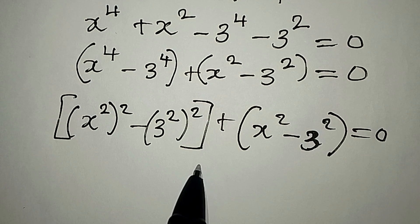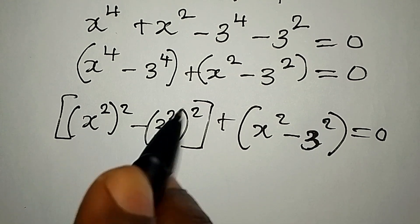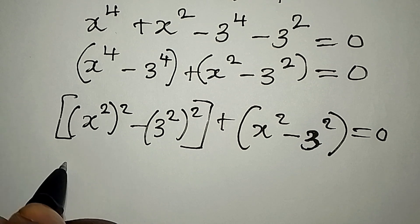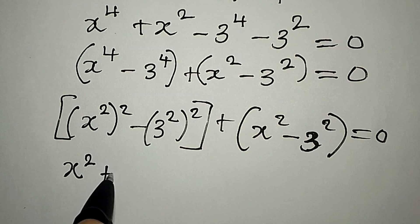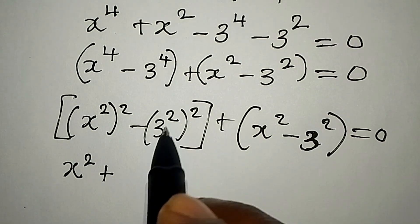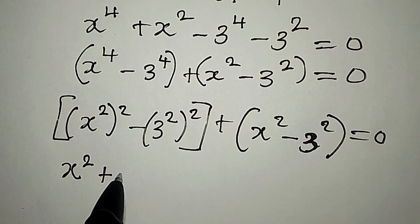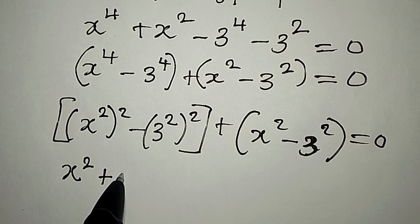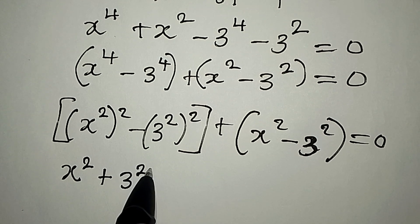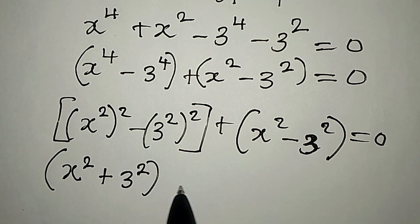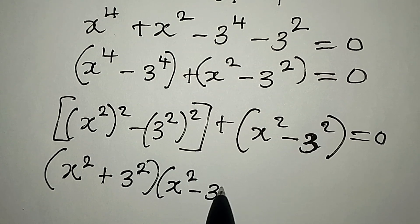We're going to apply difference of two squares here and here as well. For this first group, the difference of two squares gives us x to the power of 2 plus 3 to the power of 2, and in the second bracket x to the power of 2 minus 3 to the power of 2. This is the difference of two squares for this part, since both are carrying squares.